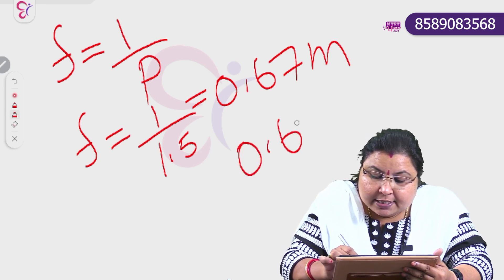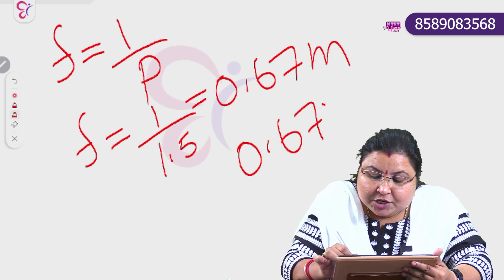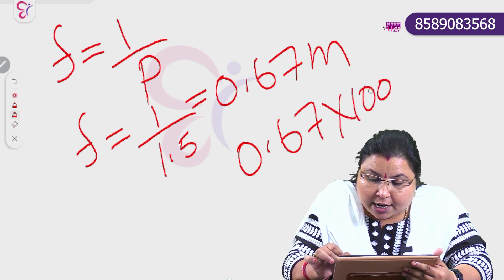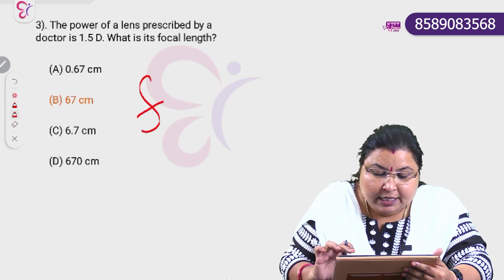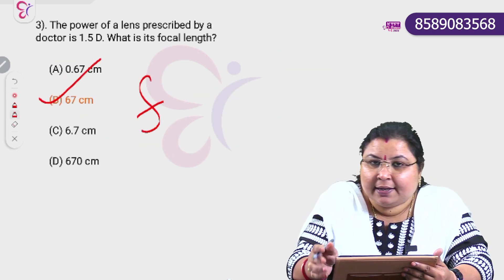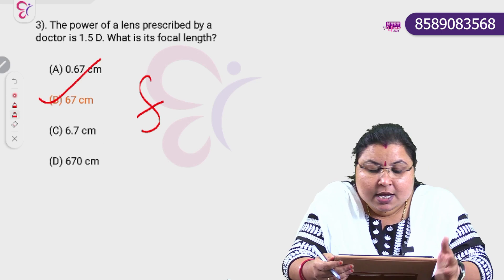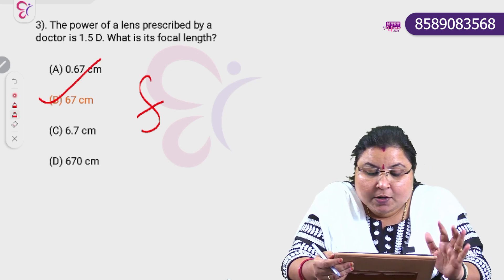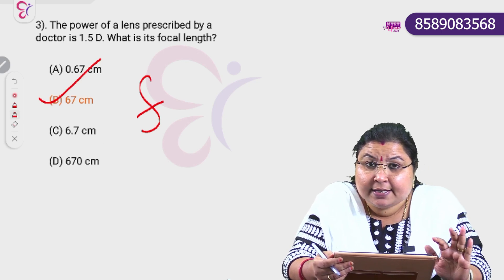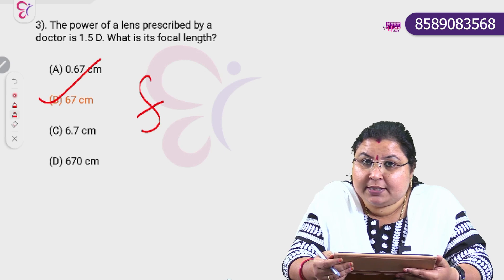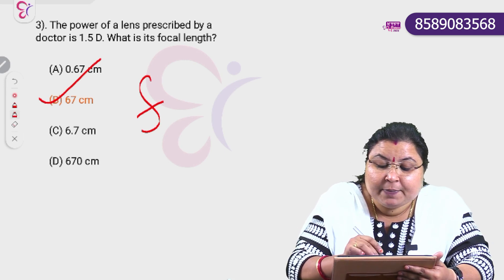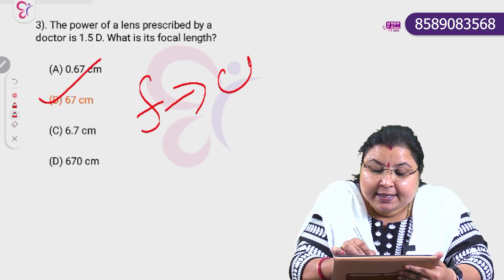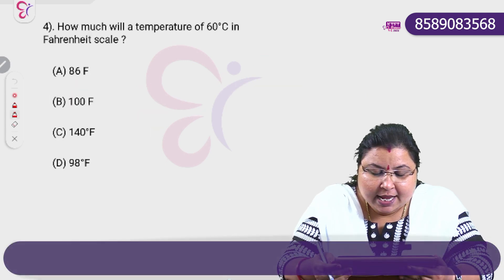That is 0.67 meter into 100, which is 67 centimeter. Option B is the correct answer — 67 centimeter. Focal length must be expressed in centimeters. 4th question.